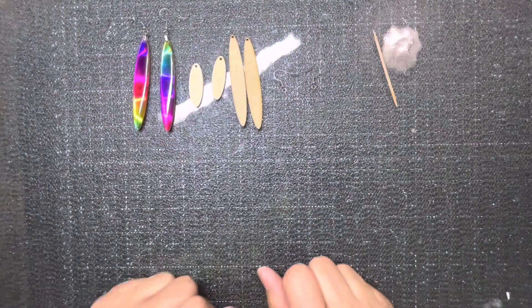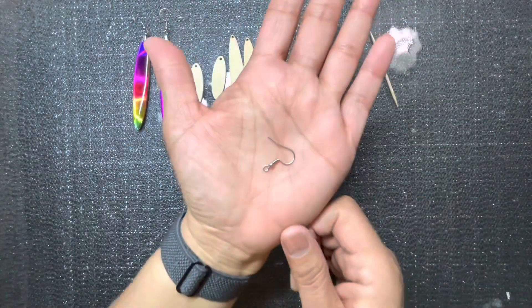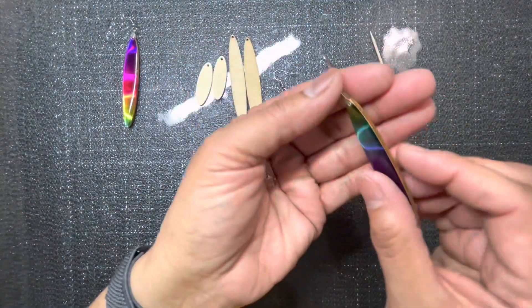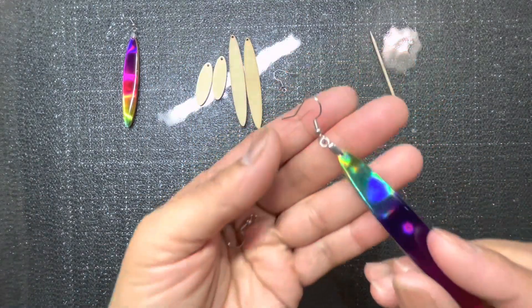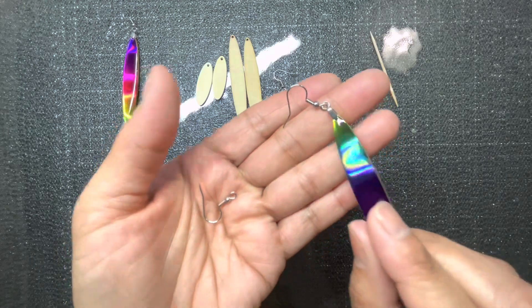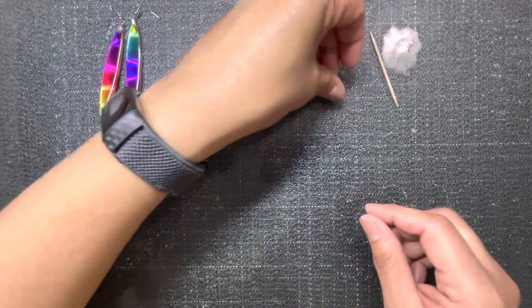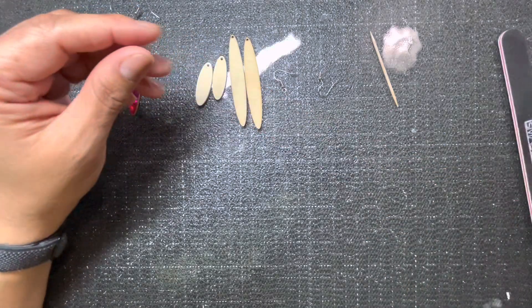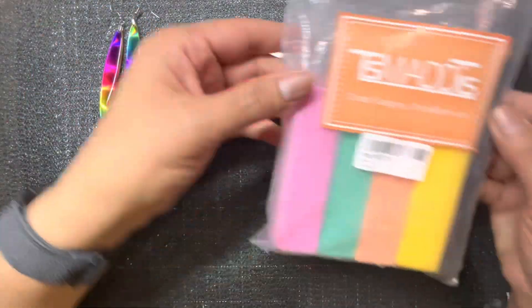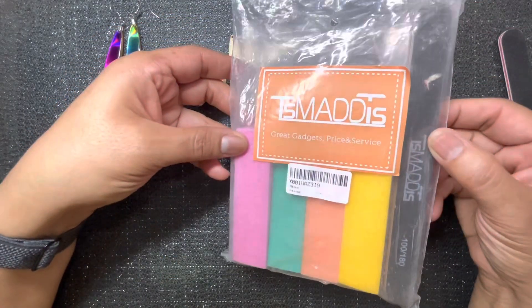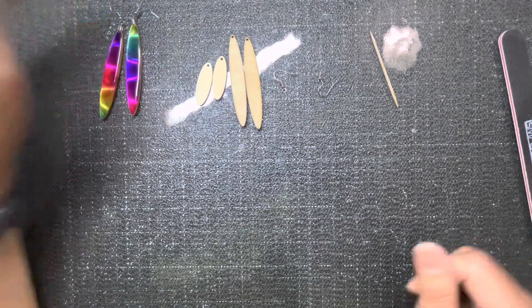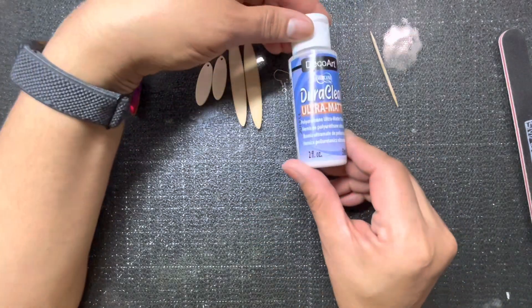So you're going to need your wood blanks, you're going to need some earring findings, whichever you decide to use. These have the bail on it already and I'm probably going to do a little different today. You're going to need a nail file. I have this package and another package that I got off of Amazon, again link will be below.